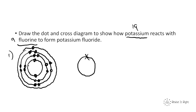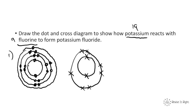Fluorine has 9 electrons — 2 in the inner shell (drawn as crosses), and 7 in the outer shell. Now when they react, potassium wants to lose its outer electron and fluorine wants to gain one to get a full outer shell. So potassium is going to give this electron to fluorine.